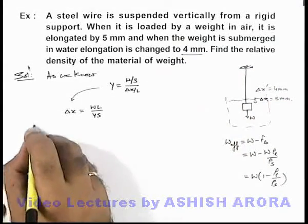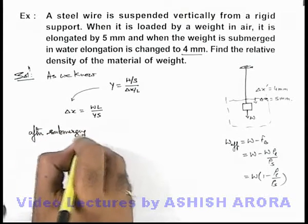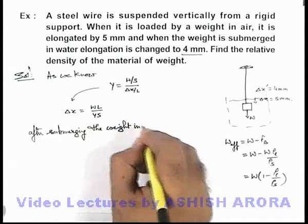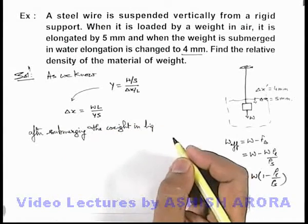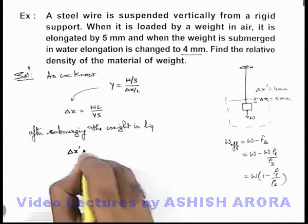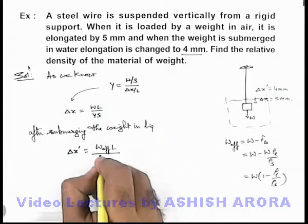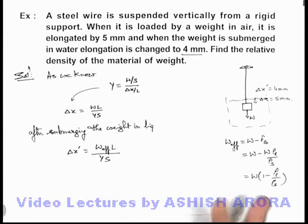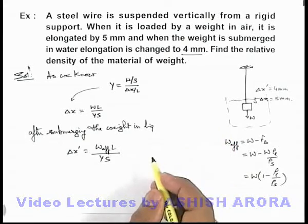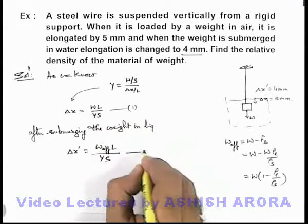After submerging the weight in liquid, delta x dash can be written as W_effective multiplied by length L, divided by Young's modulus Y times area S. Since the liquid we are using is water, the specific gravity of the weight can be simply calculated by dividing the two equations — equation 1 and equation 2.